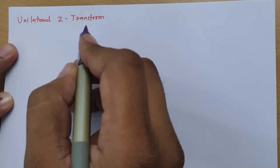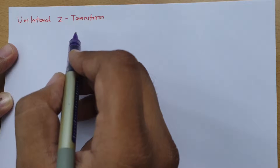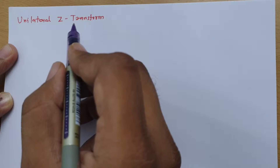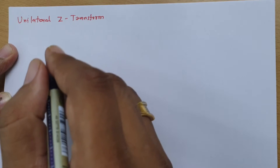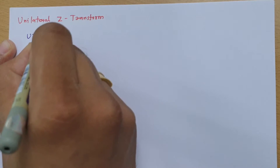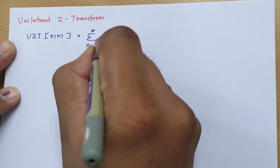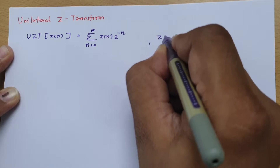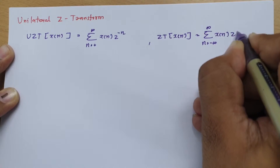Basically, unilateral Z-transform is a summation happening from limit 0 to infinity, while in case of bilateral or normal Z-transform limits go from minus infinity to plus infinity. The formula for unilateral Z-transform is similar to bilateral Z-transform — the only difference is the limits. For unilateral Z-transform: summation from 0 to infinity of X(n) * Z^(-n). For bilateral Z-transform: summation from minus infinity to infinity of X(n) * Z^(-n).